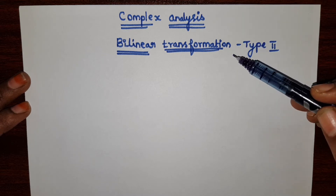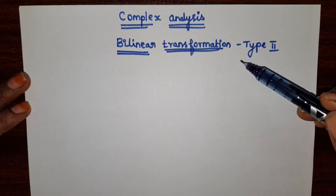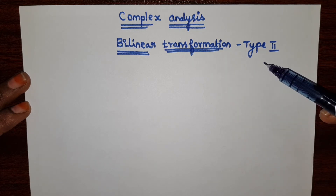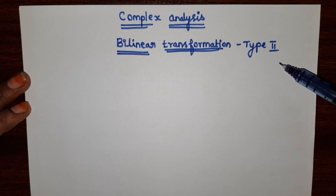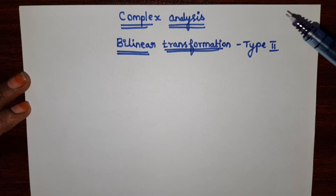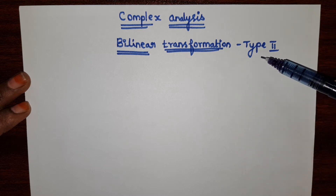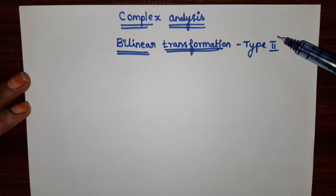In the previous video, we have seen bilinear transformation for 3 points. If all the points are in numerical values, we can solve that problem using Type 1 method. If there exist undefined terms, we can solve the bilinear transformation using Type 2 method.